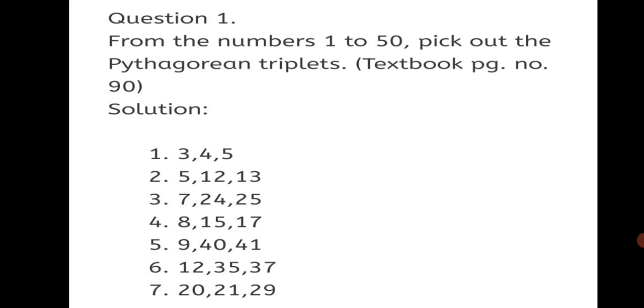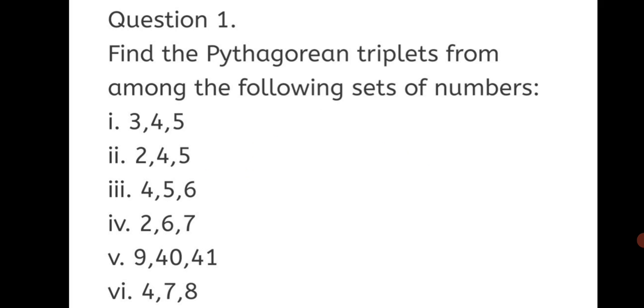A triangle with sides which form a Pythagorean triplet is always a right-angled triangle. Now let us begin with Practice Set 49.